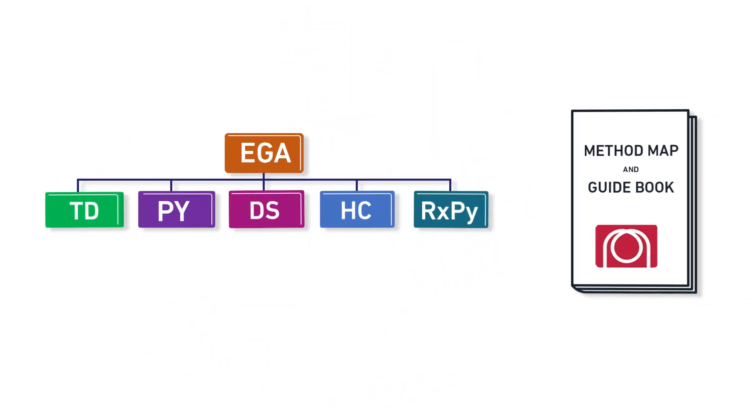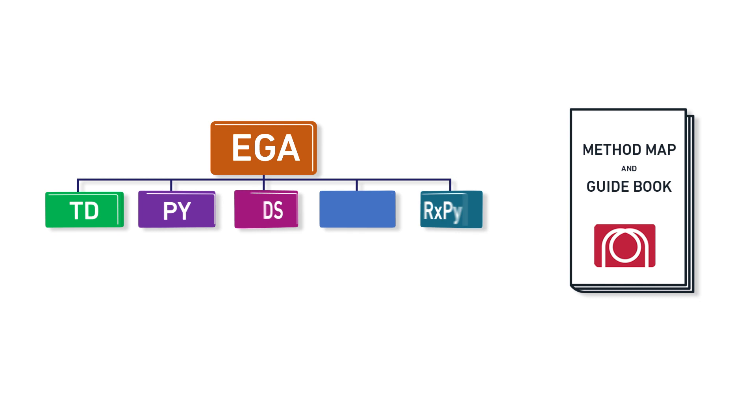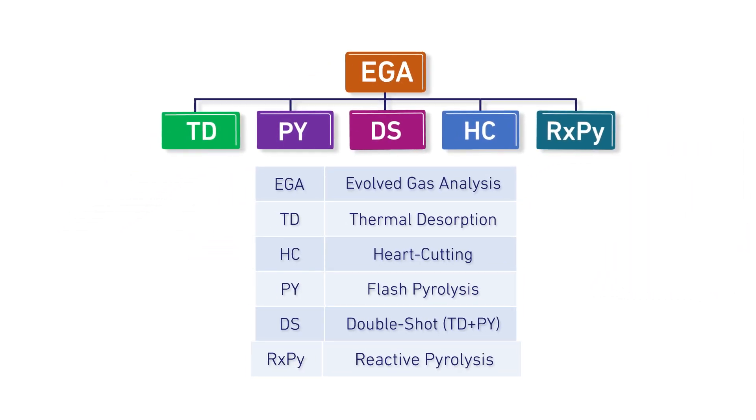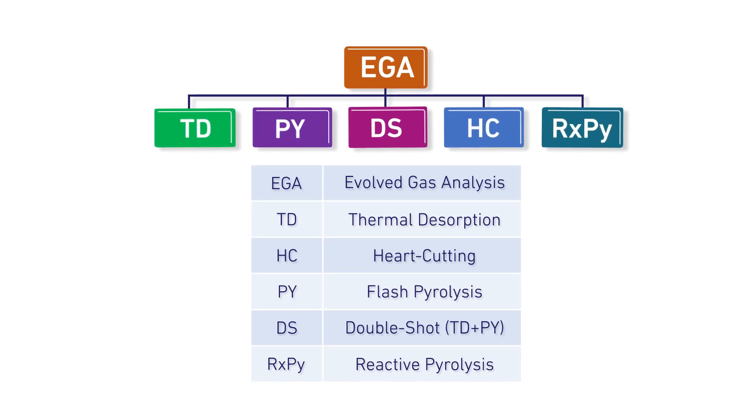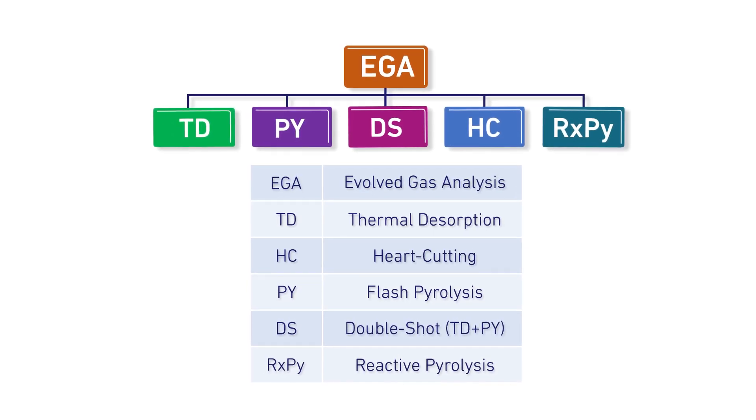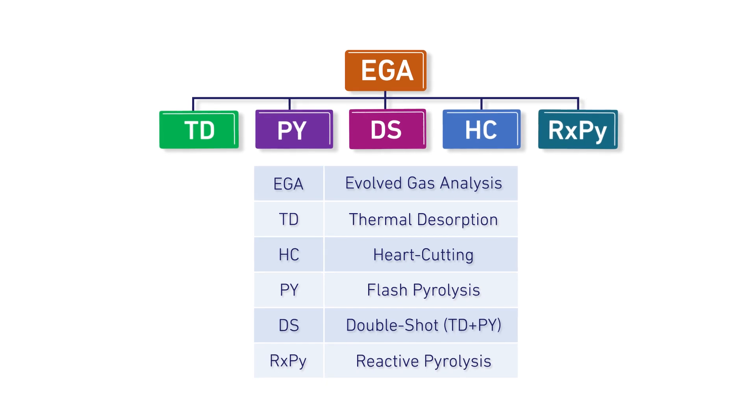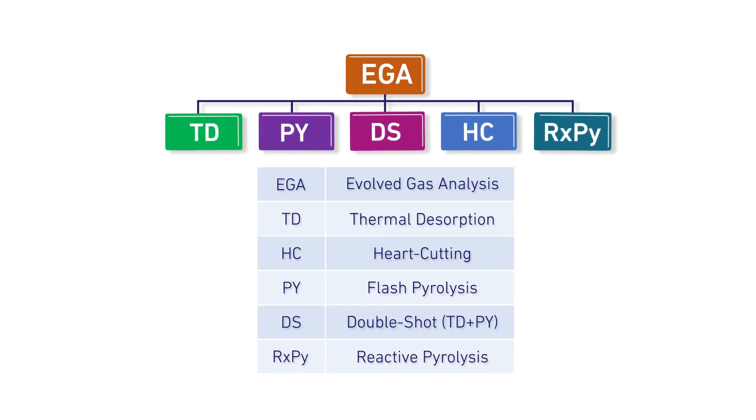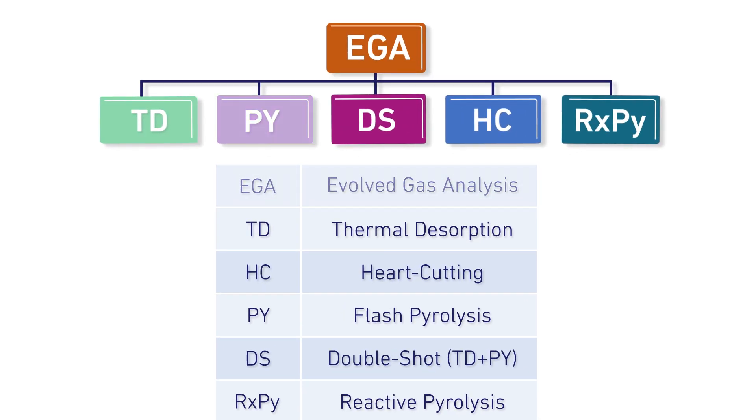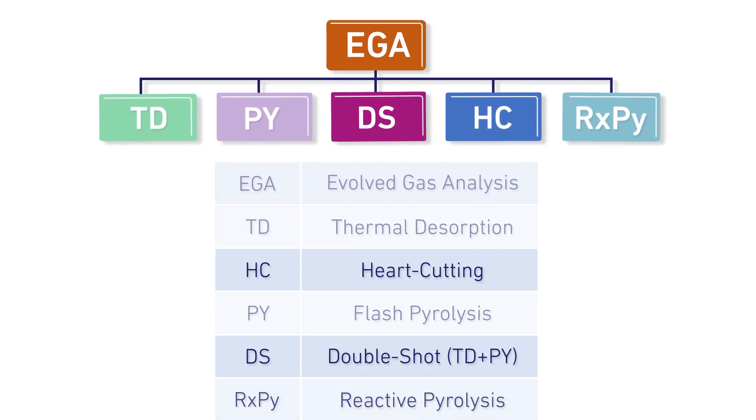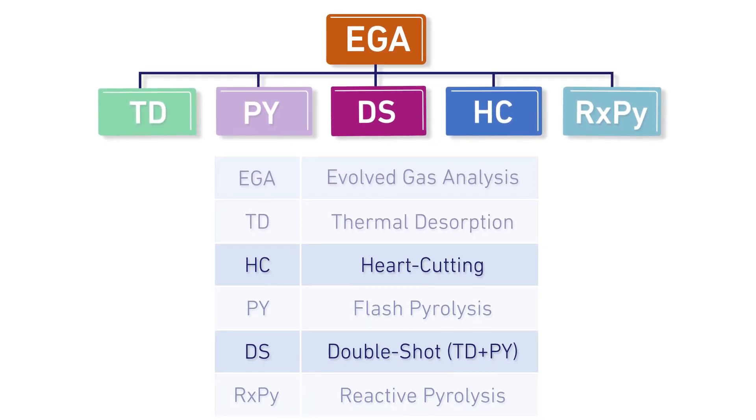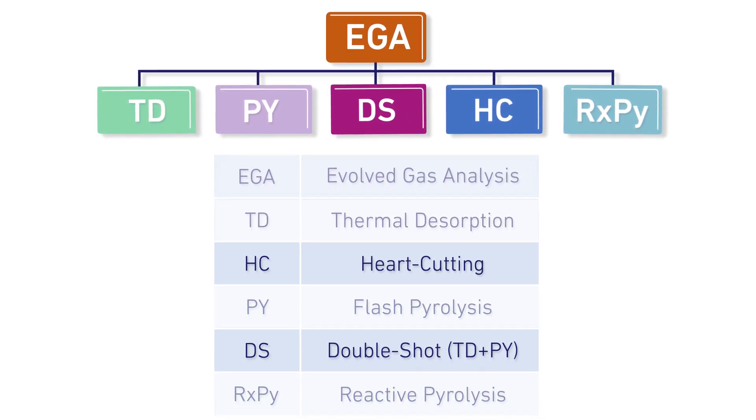From the method map video, we learned that EGA is the first step in material characterization. EGA provides information about the thermal complexity of the sample, the nature of the polymer, and the presence or absence of specific compounds of interest. It will show if double-shot, heart-cutting, or flash pyrolysis is needed, or if a combination of the techniques is required.